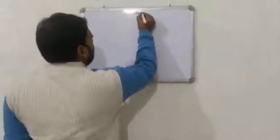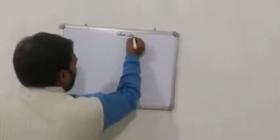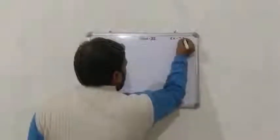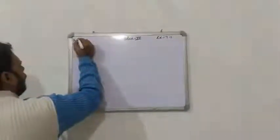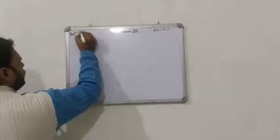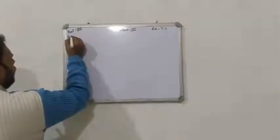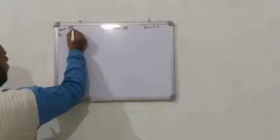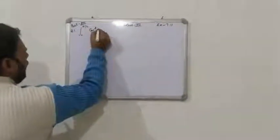Class 12, Exercise 7.11, Part 12, Question number 1: evaluate the integral from 0 to π/2 of cos²x dx.